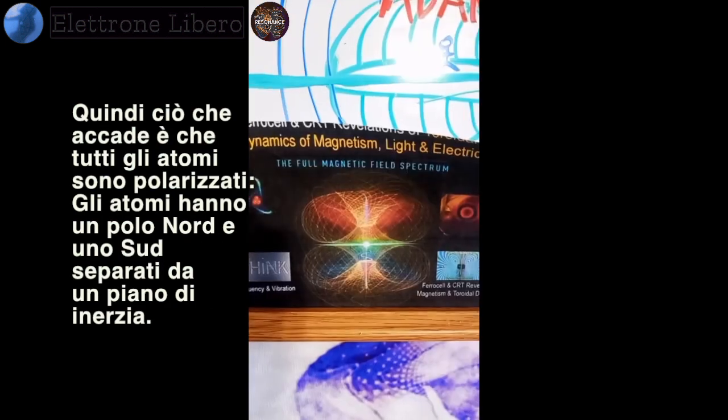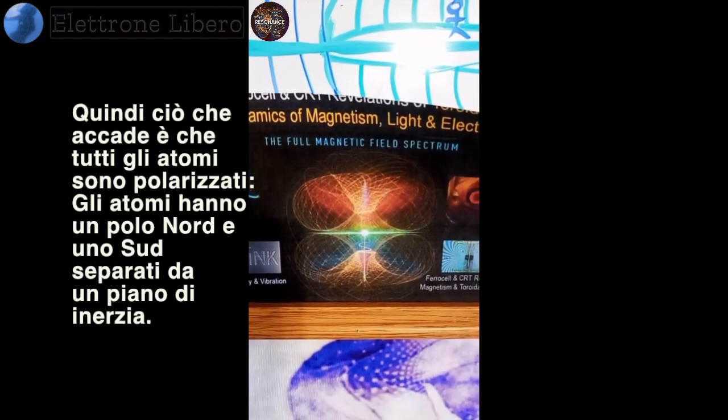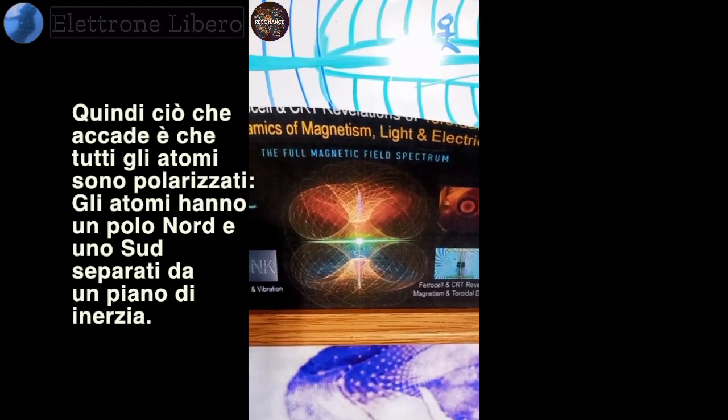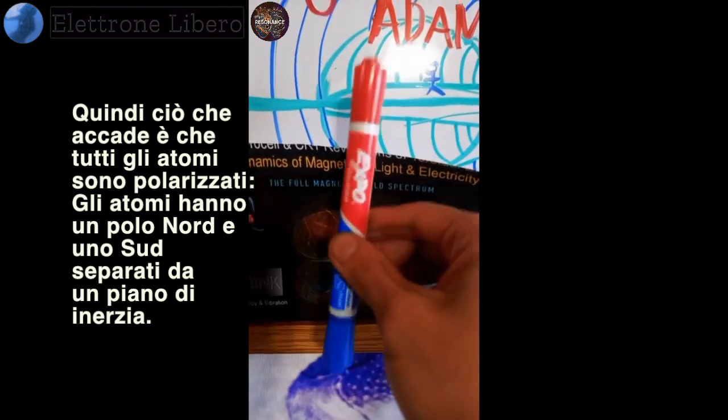So what you have is, all atoms are polarized, so atoms have a north and south pole separated by a plane of inertia.